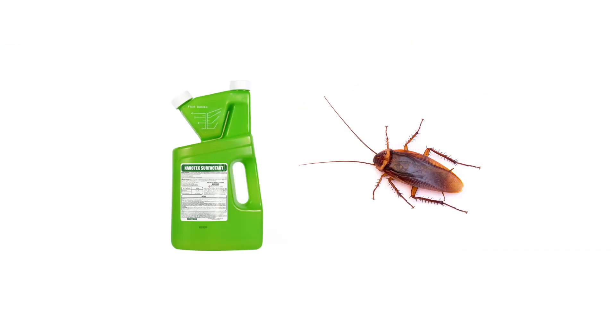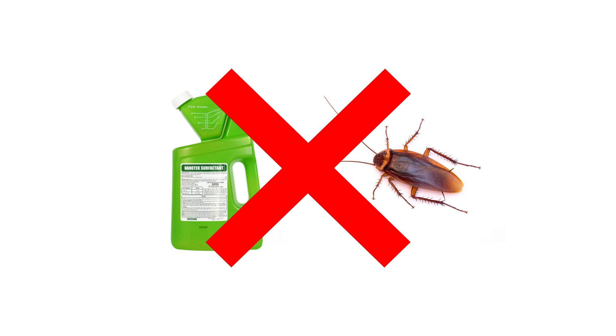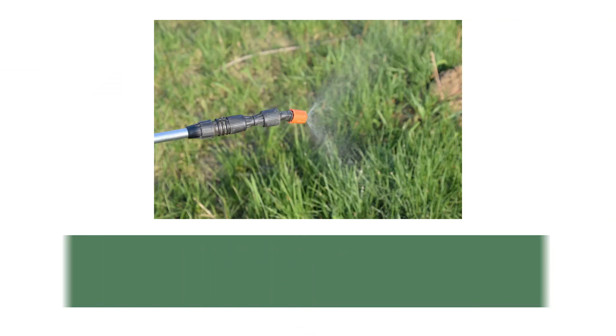Nanotech Surfactant does not contain any active ingredients that will control pests or provide nutrients to plants or turf. You must mix this product with a pesticide or fertilizer to get any use from it.